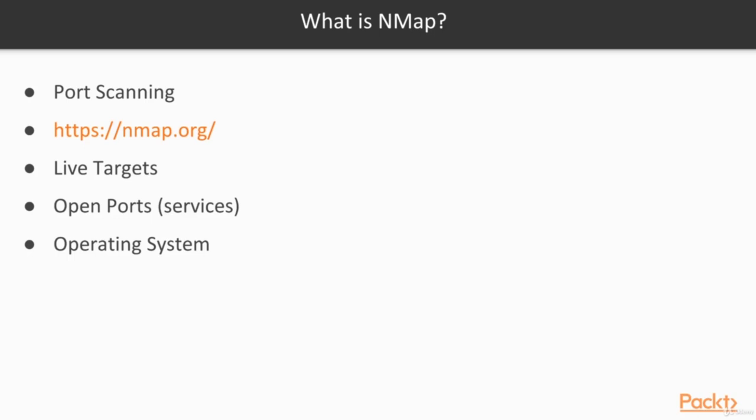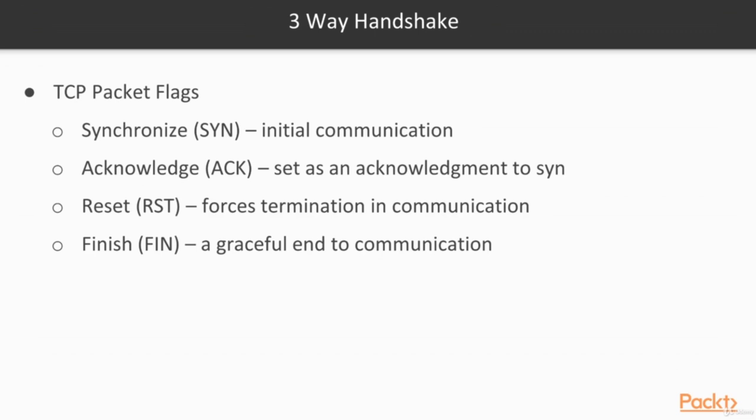Let's talk about the TCP three-way handshake. TCP uses flags in packets. The SYN flag (synchronize) is used during initial communication. The ACK (acknowledge) flag is sent as an acknowledgement to the SYN. The RST (reset) flag forces a termination in communication. And the FIN (finish) flag is a graceful end to communication. When two computers want to talk, they set up a communication channel using TCP sequence numbers, offering reliable connection-based communication.